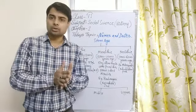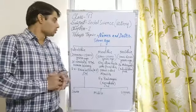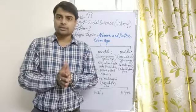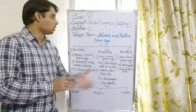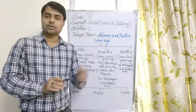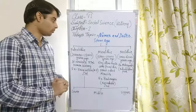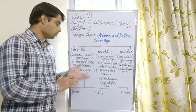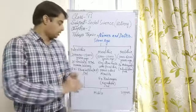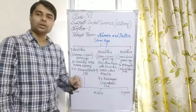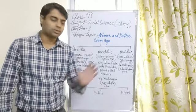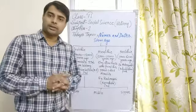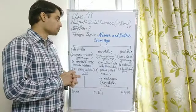First, look at your book at the blue box where some dates are mentioned. The Stone Age was divided by archaeologists into three parts: Paleolithic age, Mesolithic age, and Neolithic age. We will learn today how archaeologists divided the Stone Age into these different parts and their time periods.